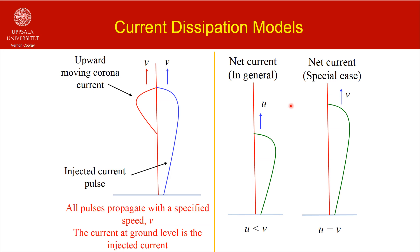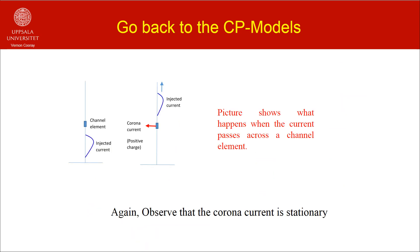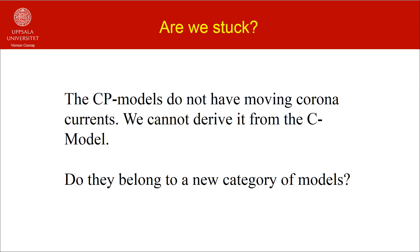Let me give you some information on CP models. First, all the CP models are a special case of the CD models. Second, if you select the corona current in the CD model so that it will not completely eat into the front of the injected current, you will get a CP model. Third, the speed of propagation you assume for the injected and corona current in the CD model would be the speed of propagation of the current in the CP model. Consider a CD model where the injected current moves upward with speed V and the corona current moves upward also with speed V. The corona current at any level is given by the injected current at that level multiplied by an arbitrary function A(z), where z is the height along the return stroke channel.